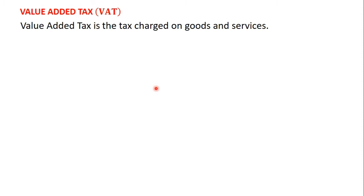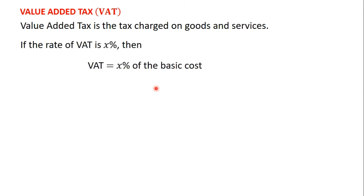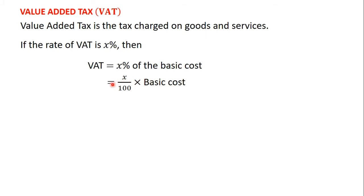As we saw in the previous video, taxes are calculated using rates, and the rates are given in terms of percentage. So if the rate of VAT is X percent, then the value-added tax is equal to X percent of the basic cost of an item — the same as X divided by 100 times the basic cost of the item.